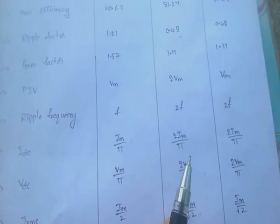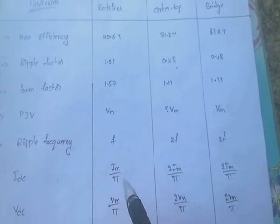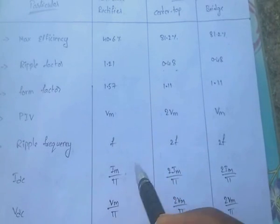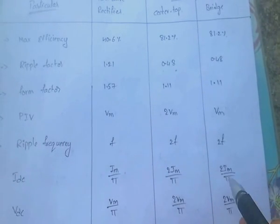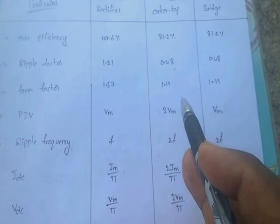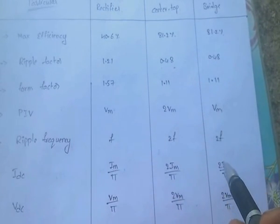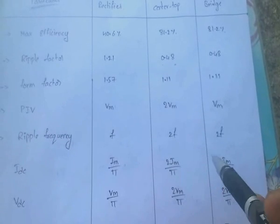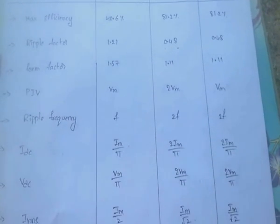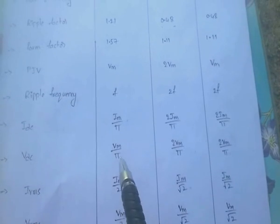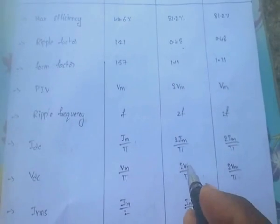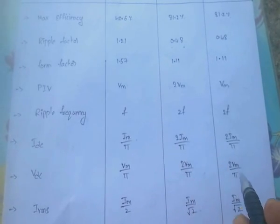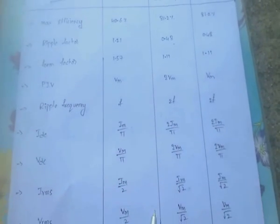IDC equals I_M divided by pi for half wave rectifier. For full wave rectifier (both center tap and bridge), IDC equals 2I_M divided by pi. VDC equals V_M by pi for half wave rectifier, and 2V_M by pi for both center tap and bridge rectifier.